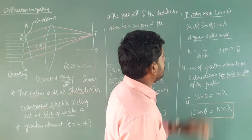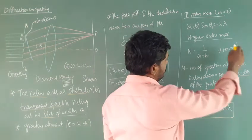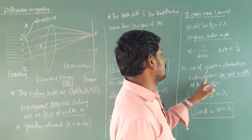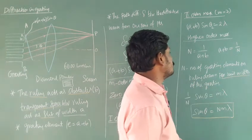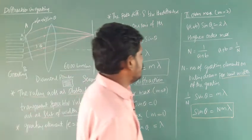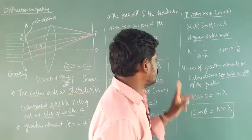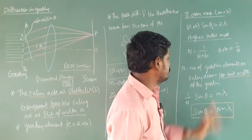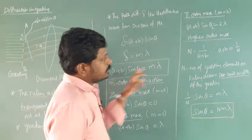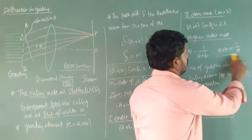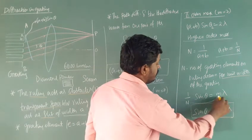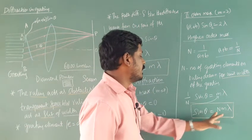Here n equals 1 divided by (A plus B), so rearranging, A plus B equals 1 by n, where n is the number of grating elements or rulings drawn per unit width of the grating. For a commercial grating with 6000 lines per centimeter, substituting gives sin theta equal to m times n times lambda, which is the diffraction maximum condition for a grating.